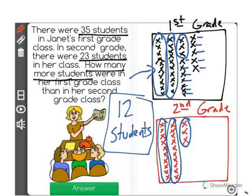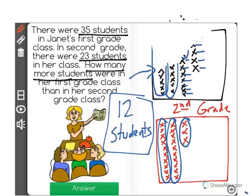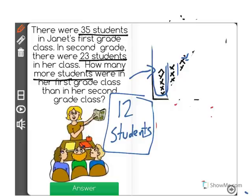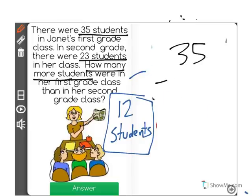Basically, what we did there is we compared these two with a subtraction problem. We said that we know there are a total of 35 students in her first grade class and we subtracted the 23 students from her second grade class to find out there was a difference of 12.